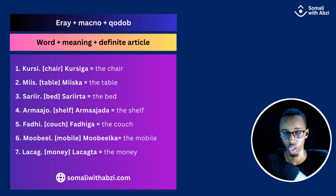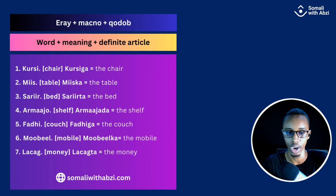So in the Somali language, the different articles are very, very important when you're making a sentence — or maybe you're going to say my book, my table, my chair, etc. Like when you're going to use possessives in Somali, it's very important to use definite articles before you say 'my.' Alright, let's start.